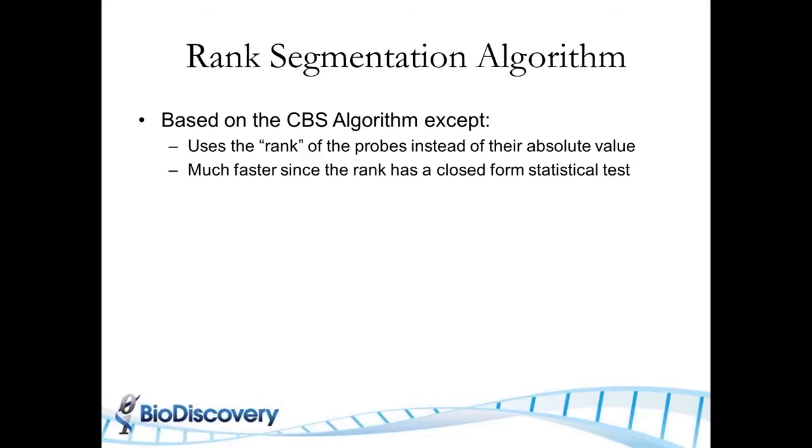Now, rank segmentation is based on CBS. This is something that BioDiscovery has developed and incorporated into Nexus copy number. And the difference is instead of using the absolute value, we use the rank of the probe. So it's more robust to outliers. It also has this great advantage that it has a closed statistical test. So the computation becomes much more efficient. You don't have to do permutation testing for the p-value calculation. So it's much faster.